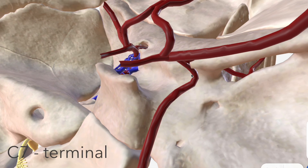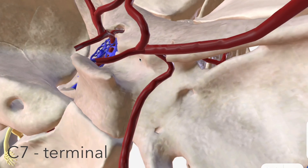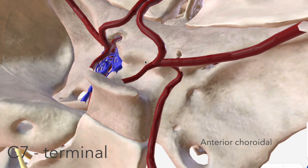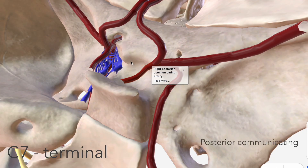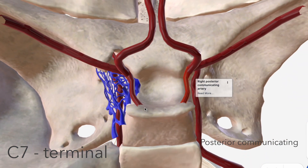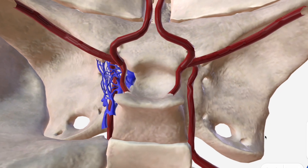C7 is the terminal segment, otherwise known as the communicating segment, and has two more branches. There's the anterior choroidal, which supplies some deep brain structures as well as the hippocampus and the amygdala. There's also the posterior communicating artery, which forms part of the circle of Willis, connecting the ICA to the basilar artery and its branches.